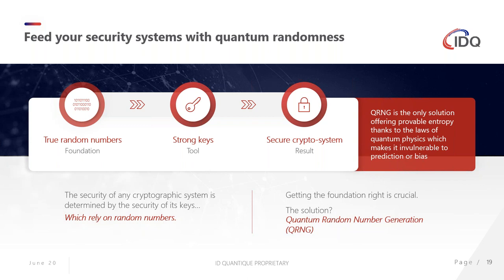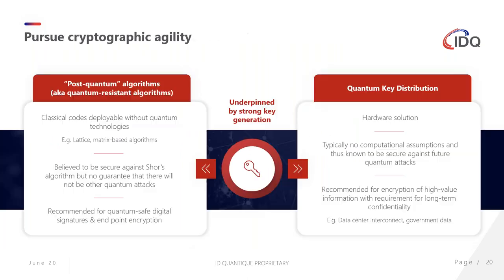Every cryptographic application starts with randomness. You always need something totally unpredictable, because if you could predict it, somebody else could too, and it won't be safe. You use random numbers to generate keys for cryptography — this is very general. Many attacks have exploited the fact that random numbers were not very good to begin with. Thankfully, quantum mechanics offers us the best possible randomness. Using quantum random number generators, we can achieve very good randomness that can be used across all cryptography.